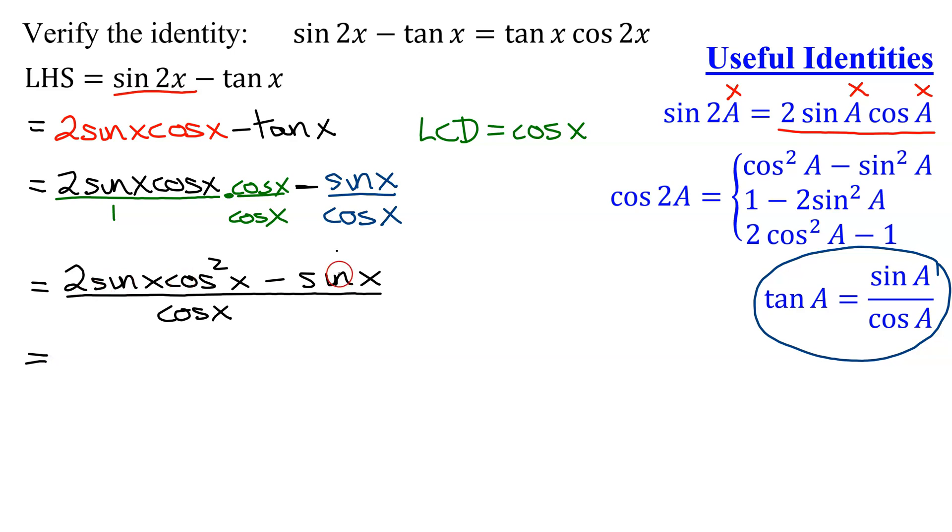Now, can I simplify the numerator? Well, they have a sine x in common, so I'm going to factor it out. And what's it going to leave behind? 2 cosine squared x minus, and if you factor a sine x out of a sine x, it has to leave a placeholder of a 1, all divided by cosine x.